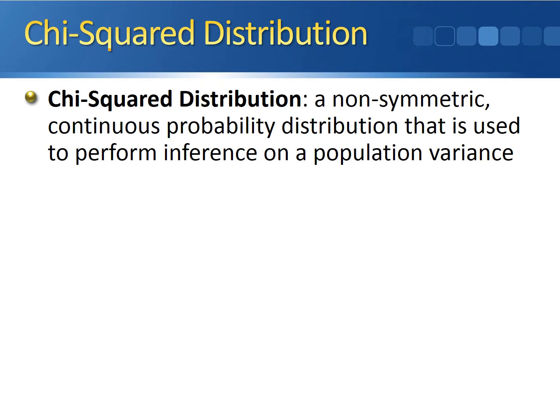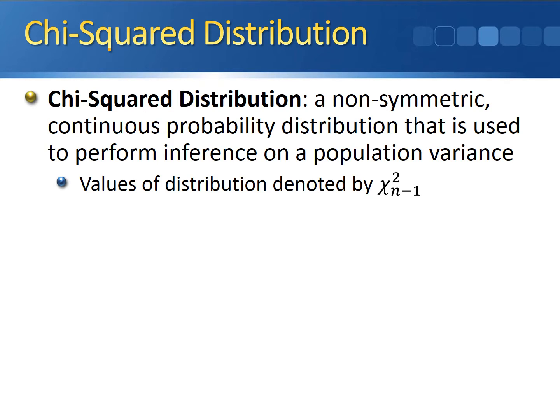This is going to differ from the other two distributions we focused on — the standard normal and the t-distribution — because it's non-symmetric. Values of the chi-squared distribution are denoted by the Greek letter chi, squared.